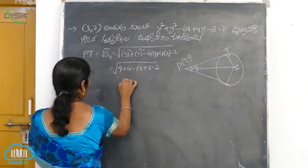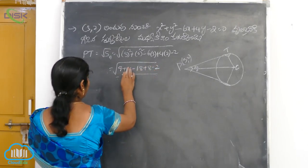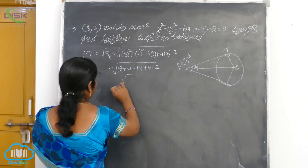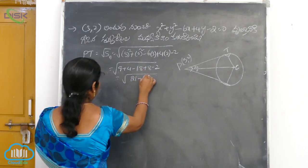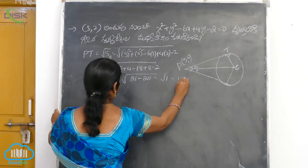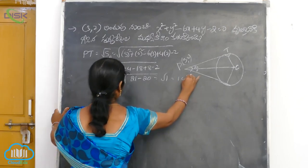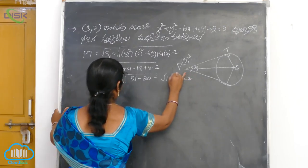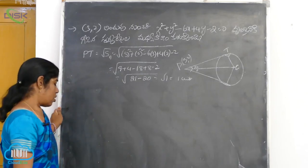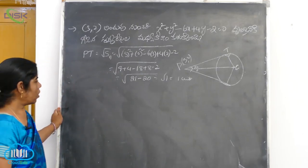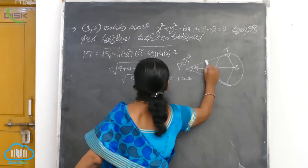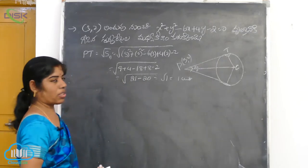Minus 2. And then 13. Plus 8 is 21. Minus 20. And then root 1. Root 1 — 1 unit. So root 1. 1 unit.